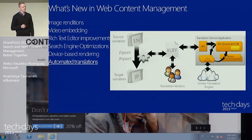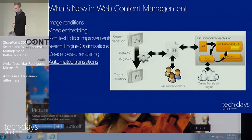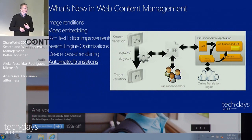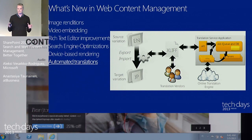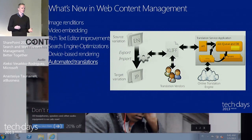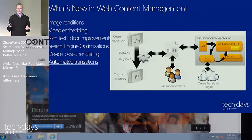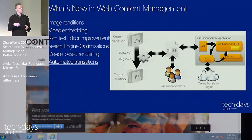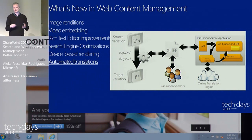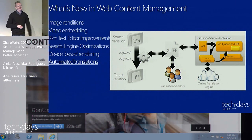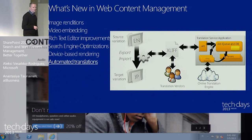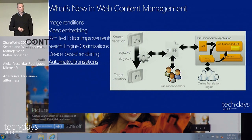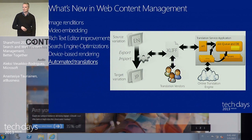Automated translations. We have integrated SharePoint into the Bing translation engine so that you can translate whatever text you want. The place where it's baked into the product is again the variations. If you have your master content in English and want to translate it to Finnish or Swedish, you create the page in English and let the automated translation process create your draft version in, for example, Swedish, which you can then start working on as the manual translator. You can also use it from the API, which gives you some alternatives.